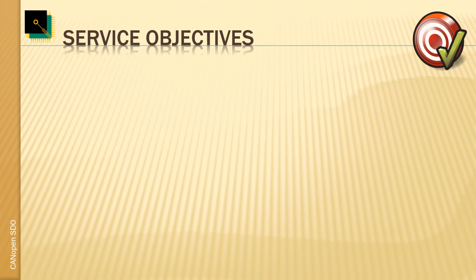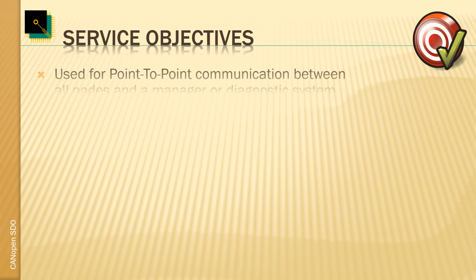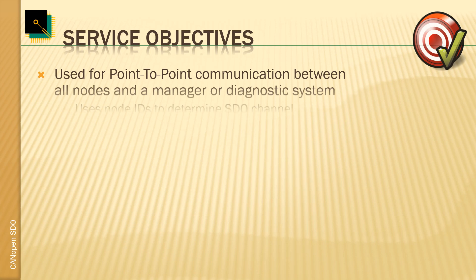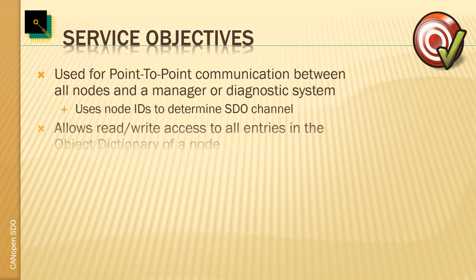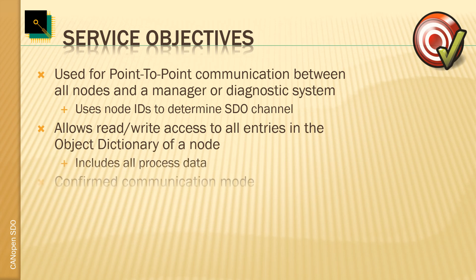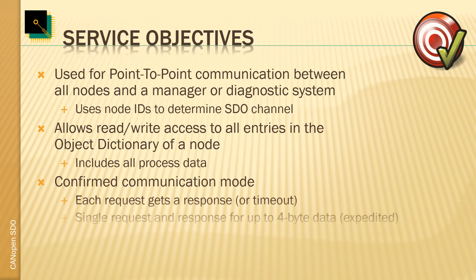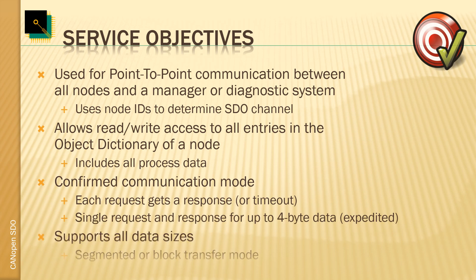The Service Data Object (SDO) is a protocol that implements point-to-point communication — it's always a request and response. A manager or diagnostic system uses it to check which nodes are connected and communicate with each device individually via an assigned SDO channel. It requires read and write access to the object dictionary of the node, and it's a confirmed communication mode: once the request is out, we either get a response or produce a timeout. A single pair of request and response supports up to four bytes of data.